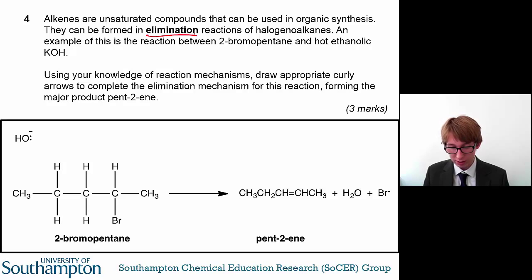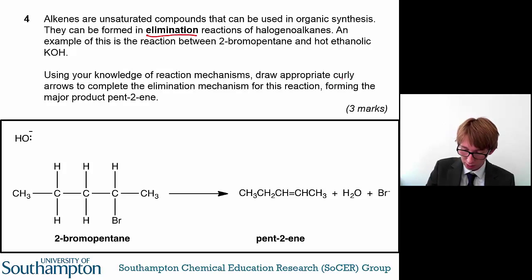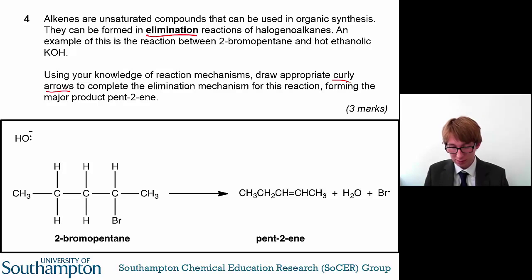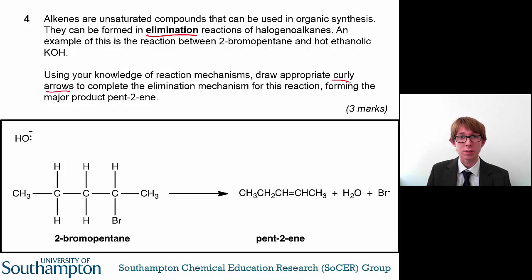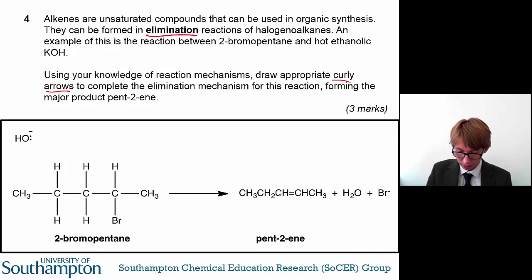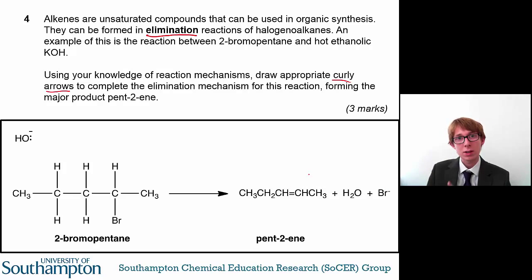Using your knowledge of reaction mechanisms, draw appropriate curly arrows — as is always the case — to complete this mechanism. You know that a curly arrow represents the movement of electrons, and you can see here you've got your reactants and your products. You can look at the products to help you figure out how this reaction proceeds.